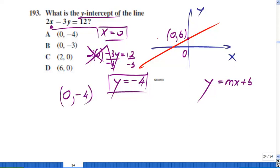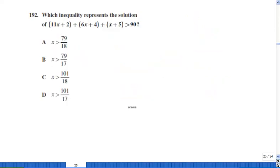And your line obviously has to cross your y-axis somewhere here, but it's not relevant for the problem. 0, negative 4. The answer, the right answer, seems to be A. We're moving on to another problem. Let's see what do we have here.